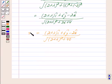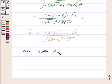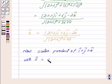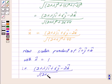So we get n cap equal to this. Now we are given that the scalar product of i cap plus j cap plus k cap with n cap is equal to 1. That is, (2 plus lambda) i cap plus 6j cap minus 2k cap upon under root of (2 plus lambda) whole square plus 40, dot i cap plus j cap plus k cap is equal to 1.